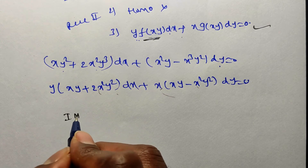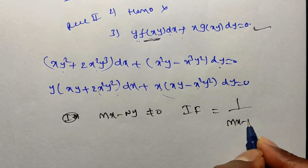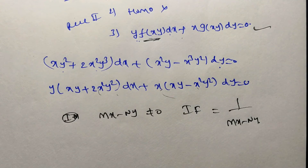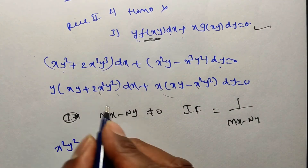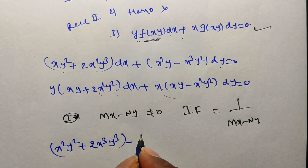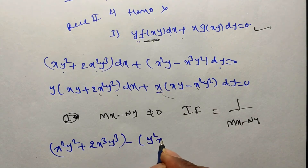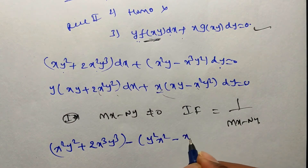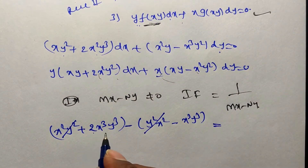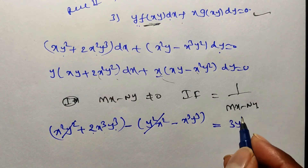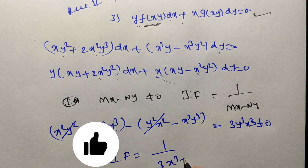When Rule 3 applies, the integrating factor is 1/(Mx − Ny), provided Mx − Ny ≠ 0. Computing Mx: multiply M by x: x²y² + 2x³y³. Computing Ny: multiply N by y: x²y² − x³y³. So Mx − Ny = (x²y² + 2x³y³) − (x²y² − x³y³) = 3x³y³, which is non-zero. Therefore the integrating factor is 1/(3x³y³).